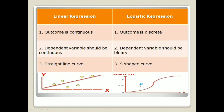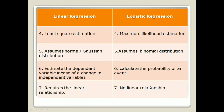Linear regression estimates the dependent variable based on a change in the independent variable, calculating the value of the dependent variable y from the independent variable. In logistic regression, the calculation is based on the probability of the event. The main distinction is that linear regression requires a linear relationship among the variables, whereas in logistic regression there is no linear relationship required — y is calculated based on the probability of all the independent variables and their events.